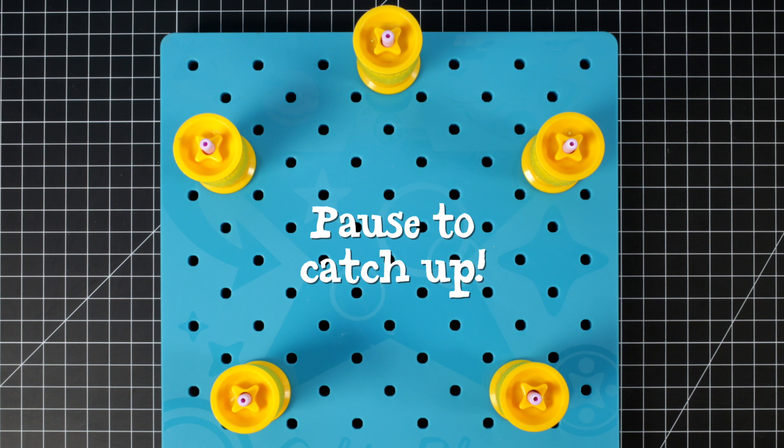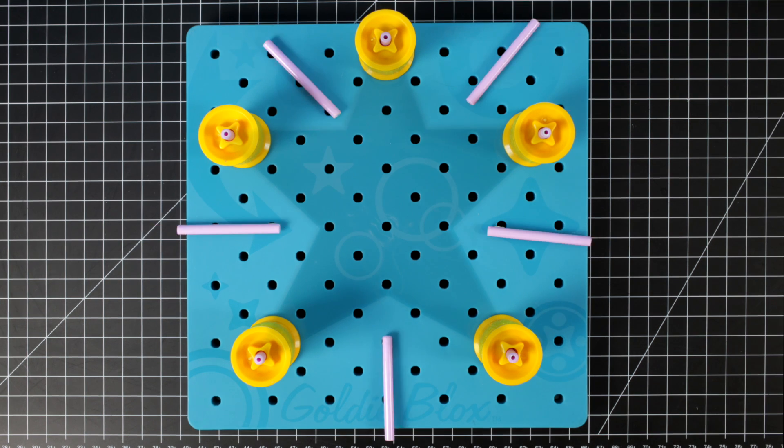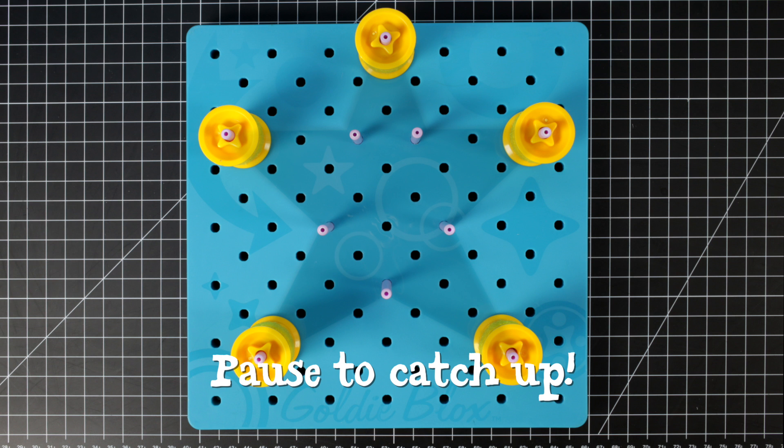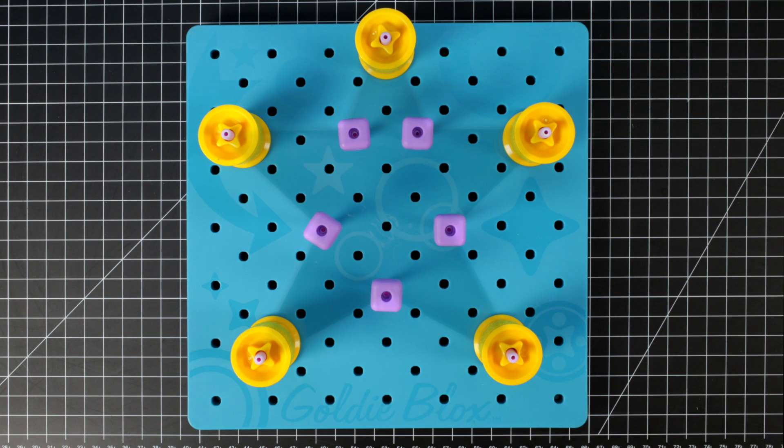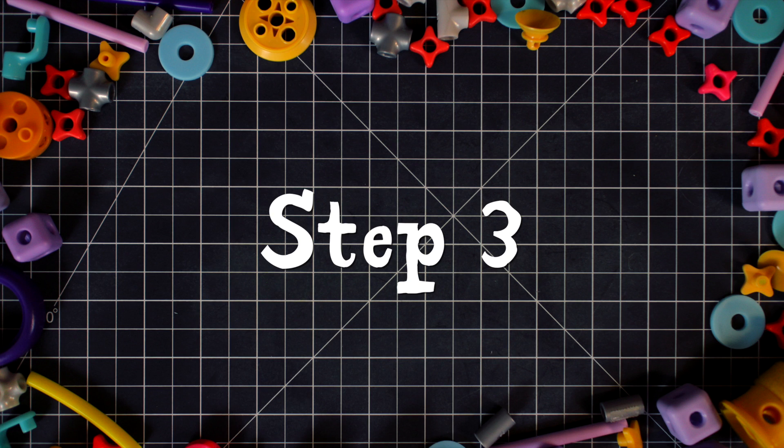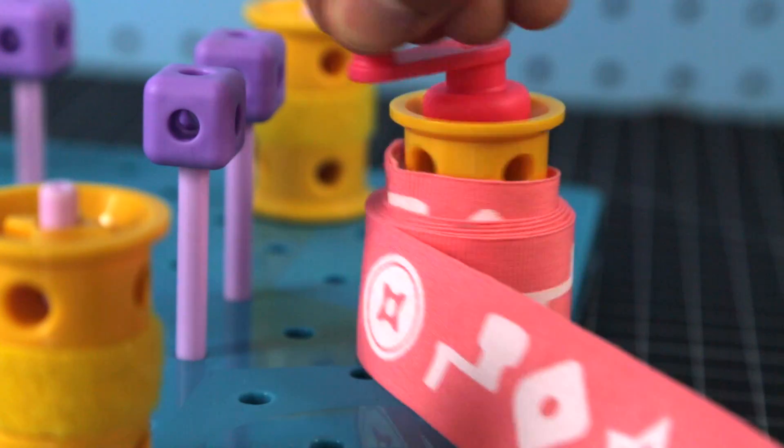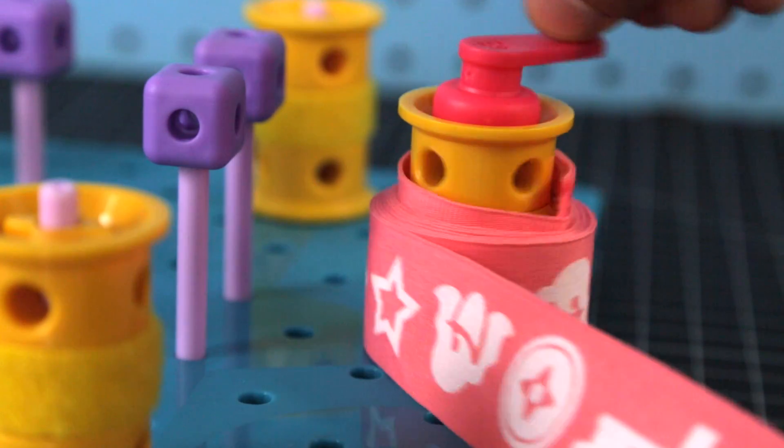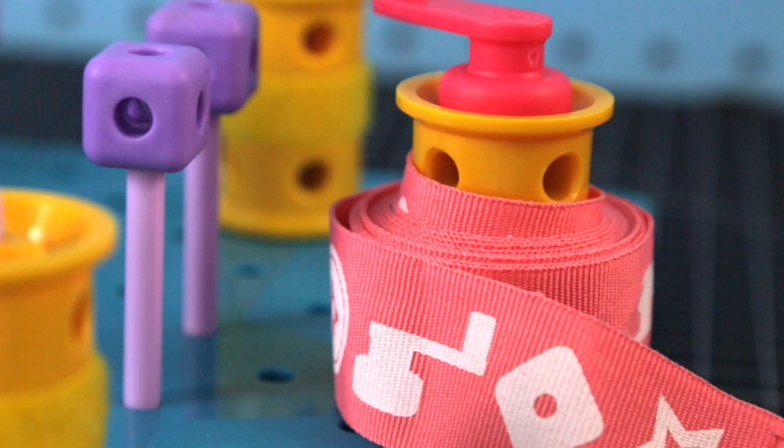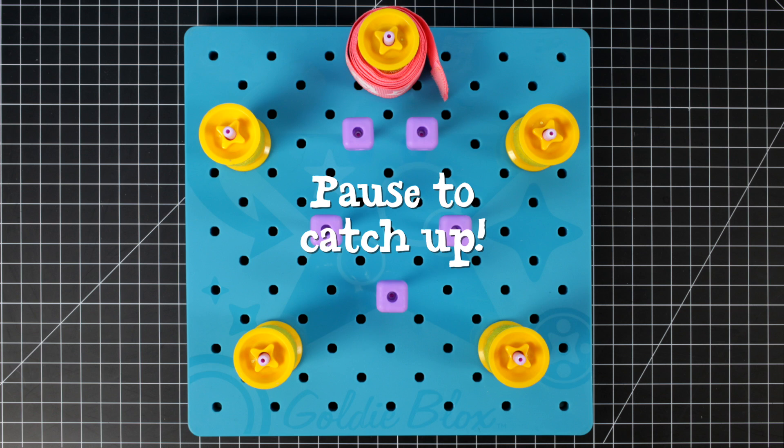Complete the star with axles and blocks. Step three: You can use your crank to tighten up the ribbon string.